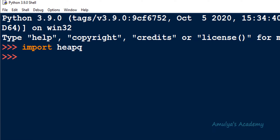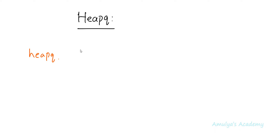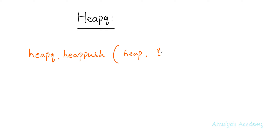Next let's see the functions of the heap queue module and how they work. The first function is heappush. Its syntax is: heapq.heappush, and here you need to mention the heap name (or list name) and the item which you want to insert.